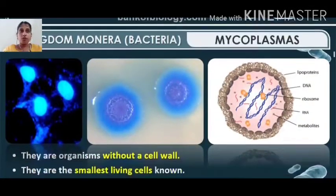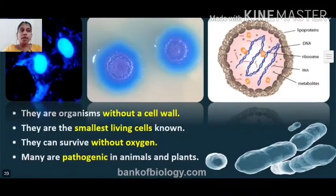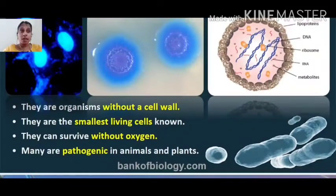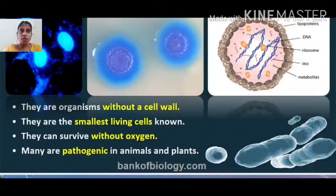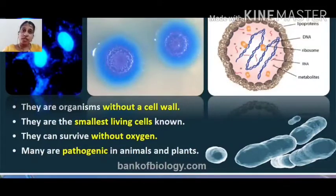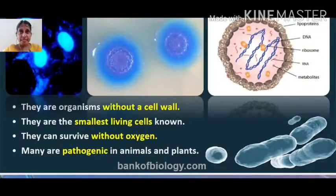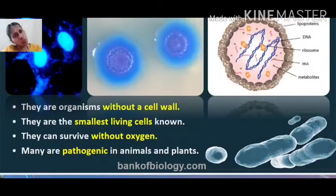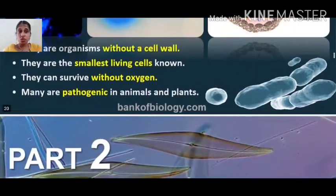Mycoplasma is the last category of Kingdom Monera. They are organisms without a cell wall and are the smallest known living creatures in the world. They are anaerobic — surviving without oxygen — and mostly pathogenic, causing diseases in both plants and animals.